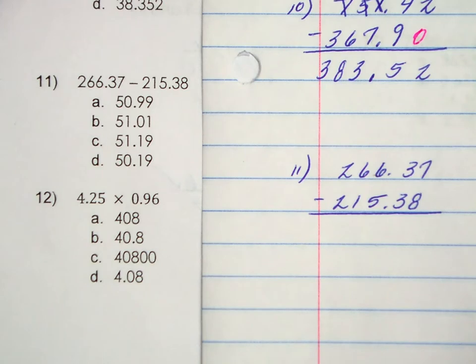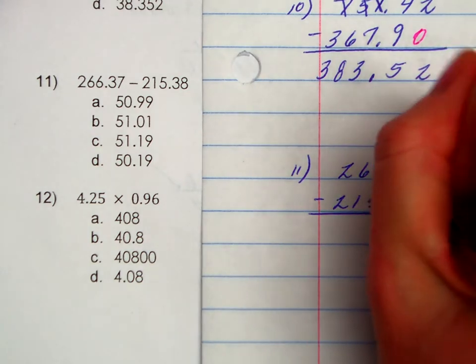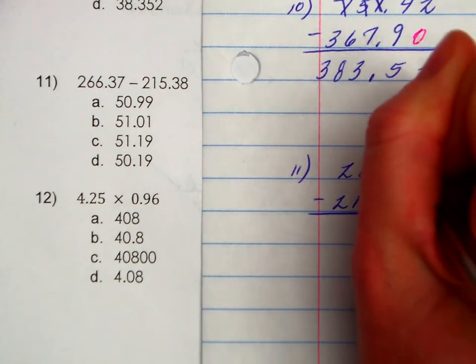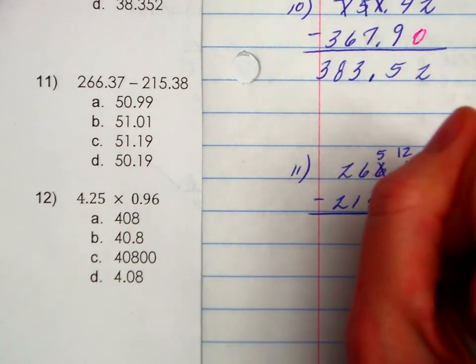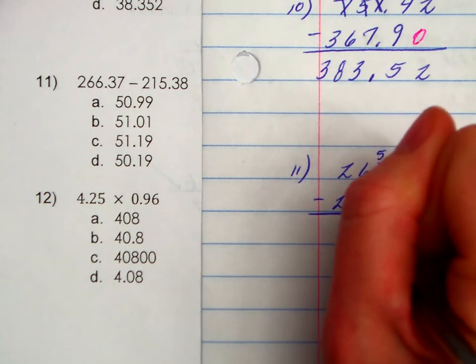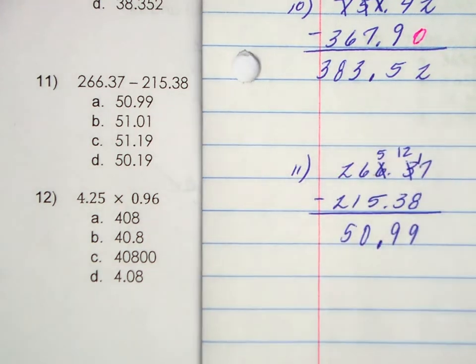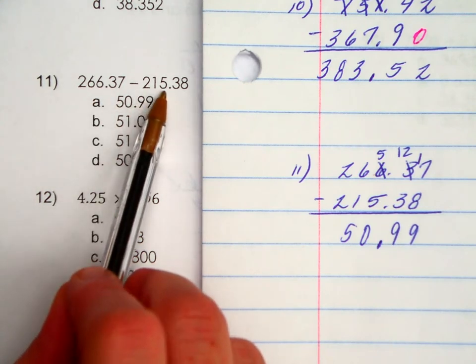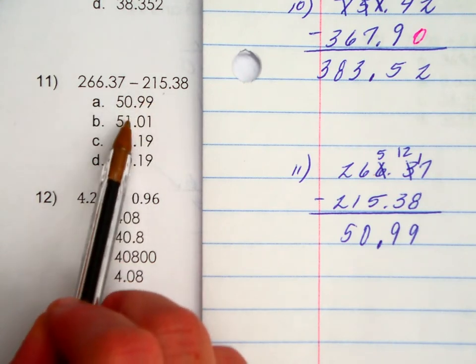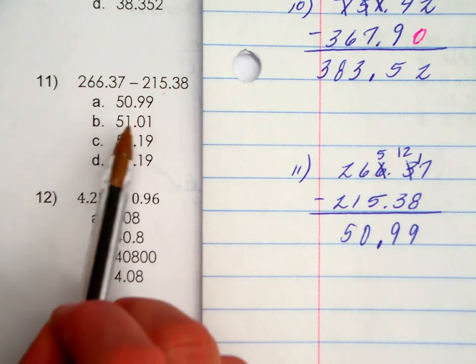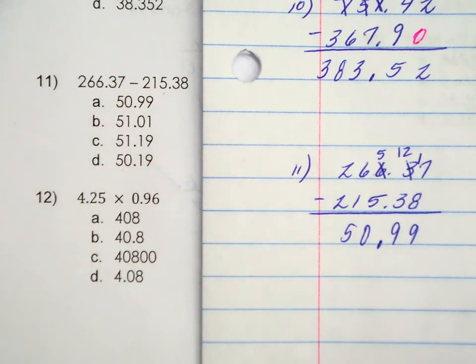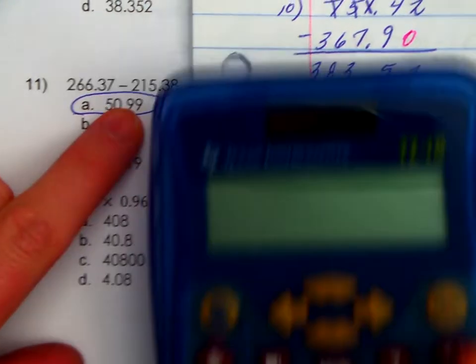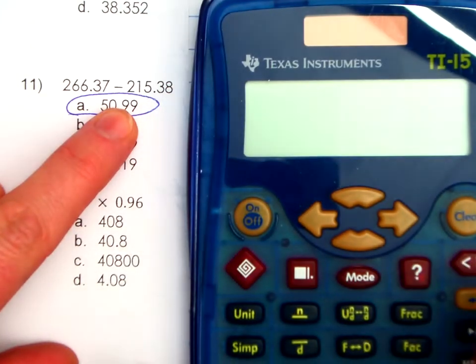7 can't take away 8. Try to regroup from here. That can't work with that. Regroup from there. I bring down my decimal. Let's see if our answer seems reasonable. 266 subtract 215. Could be about 50 or 40. They're all 50, 51, 51, 50. They're all super tight in their numbers there. We got A.